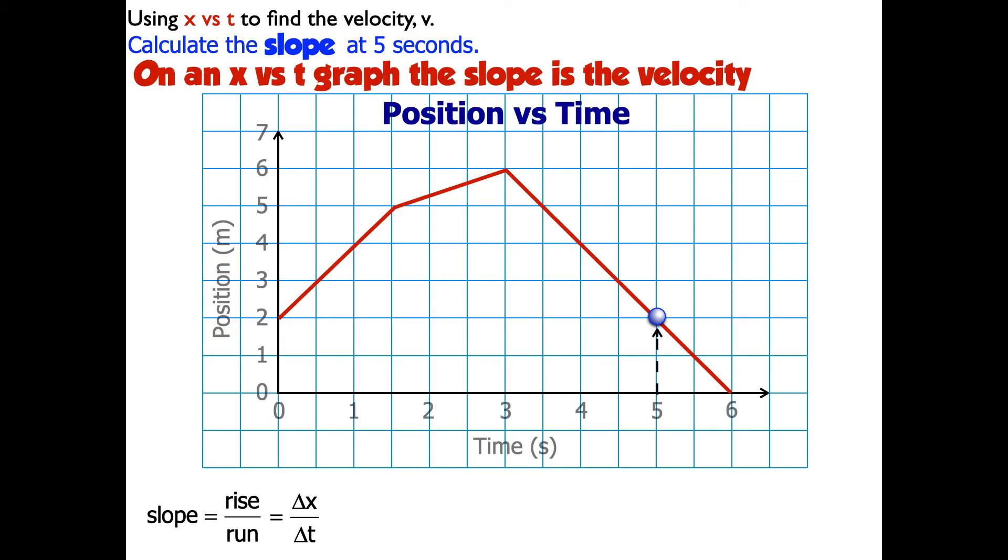So I need to pick two points. I'm going to choose two points where the line seems to go through the little corners of the squares of the graph. I'm going to pick 6 seconds where the position is 0. That's my final. And my initial, which happens earlier in time, is going to be at 3 seconds. And that's going to be at a position of 6 meters.